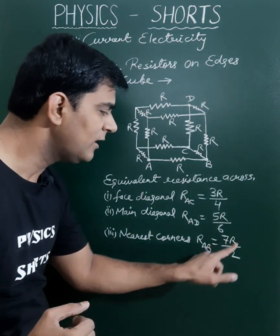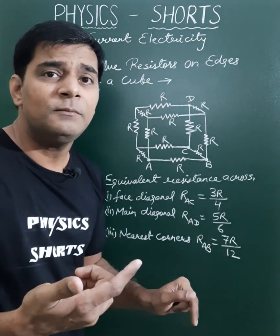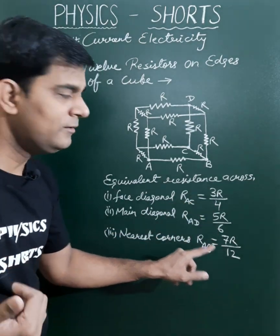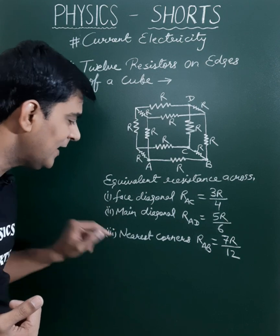Now the nearest corners - the nearest corner points are A and B. Here the equivalent resistance will be 7R/12. Easy to remember because the sequence is 3, 4, 5, 6, 7, then 12. Also remember: face, main, and nearest.